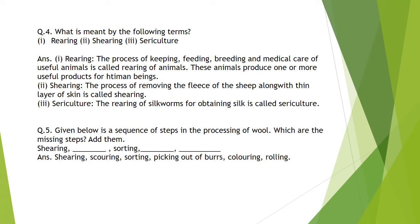Question number 5: Given below is a sequence of steps in the processing of wool — which are the missing steps? After shearing, the six steps are: Step 1 shearing, Step 2 scouring, Step 3 sorting, Step 4 picking out of burrs, Step 5 coloring, Step 6 rolling or converting into yarns. One line is missing in the question but you can still understand it.